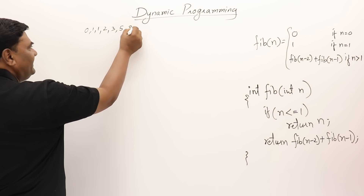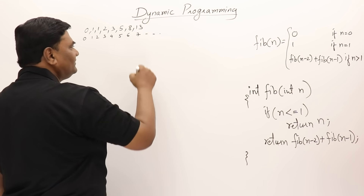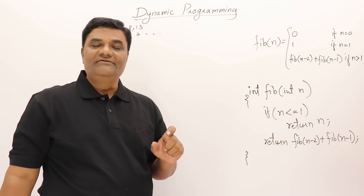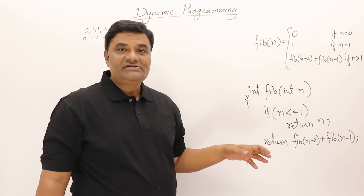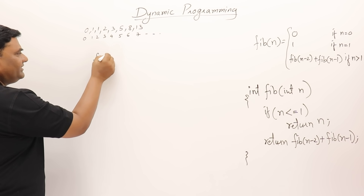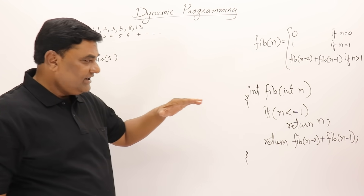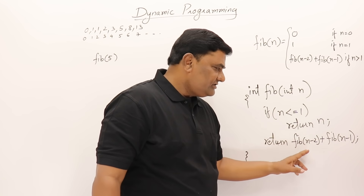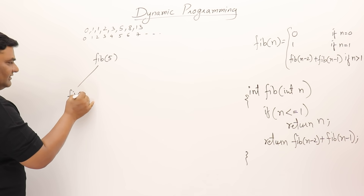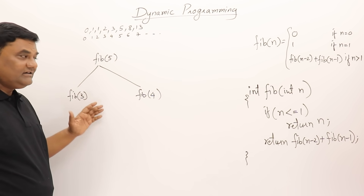So the series is 0, 1, 1, 2, 3, 5, 8, 13 and so on. Suppose I want to know the 10th term — I call this function and it gives us the 10th term. Let me trace this function for fib(5). Since n=5 is not less than or equal to 1, it will call two functions, add their results, and return. It calls fib(3) and fib(4).